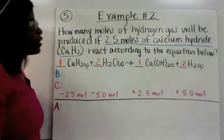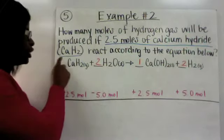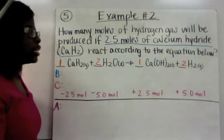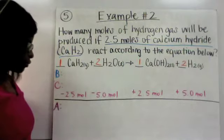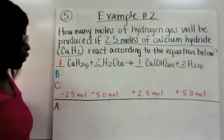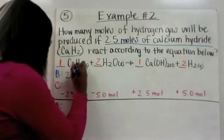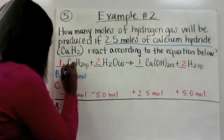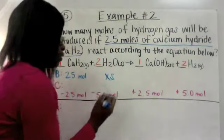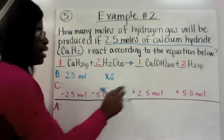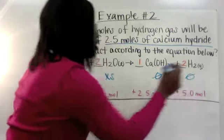Example two: how many moles of hydrogen gas will be produced if 2.5 moles of calcium hydride, which is CaH2, react accordingly to the equation below? Here it already gave you the balanced equation, so all you're doing is now filling in your BCA chart. Start with your before line: it gave you 2.5 moles of calcium hydride. If it doesn't tell you how much water, then it's going to be in excess — so XS. You have not produced calcium hydroxide or hydrogen gas yet, so those start at zero.